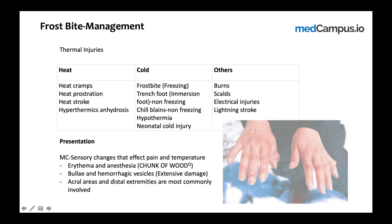Frostbite is a thermal injury. In thermal injuries there are three entities. One is heat-induced — examples include heat cramps, heat prostration, heat stroke, and hyperthermic anhydrosis. The cold-induced ones include frostbite, which we are discussing, as well as trench foot (also known as immersion foot) and chilblains.